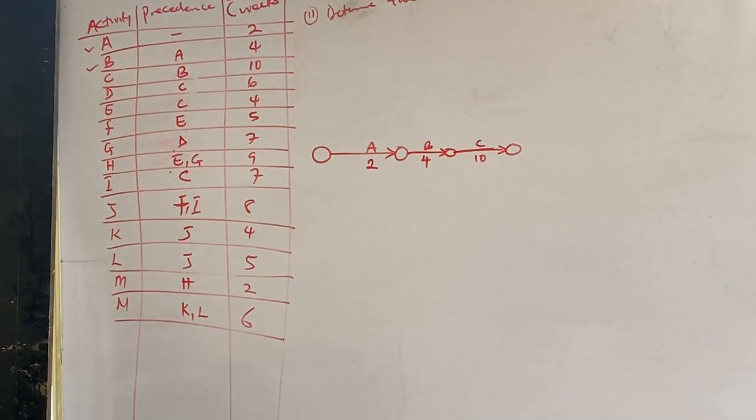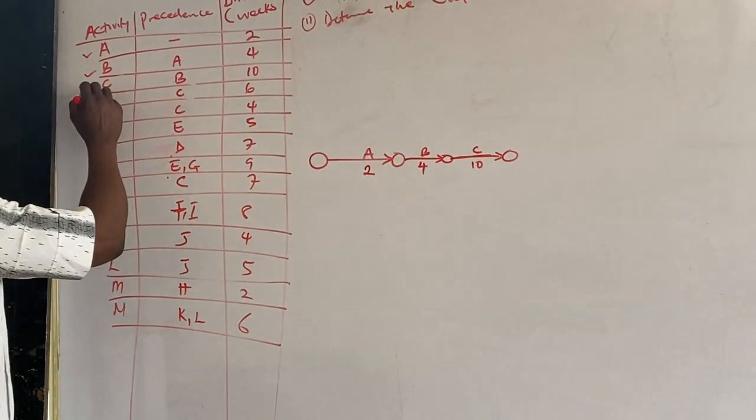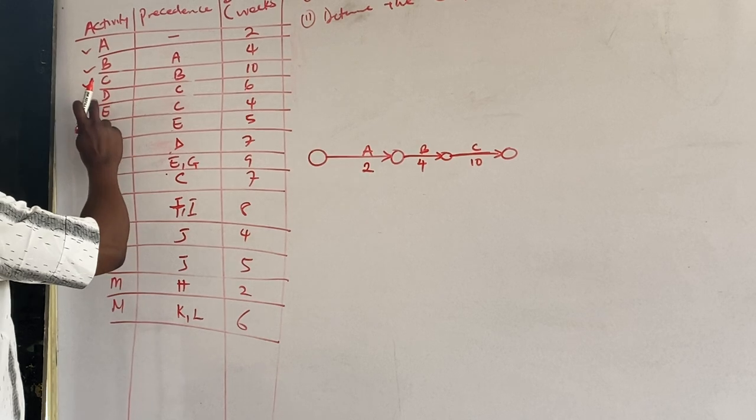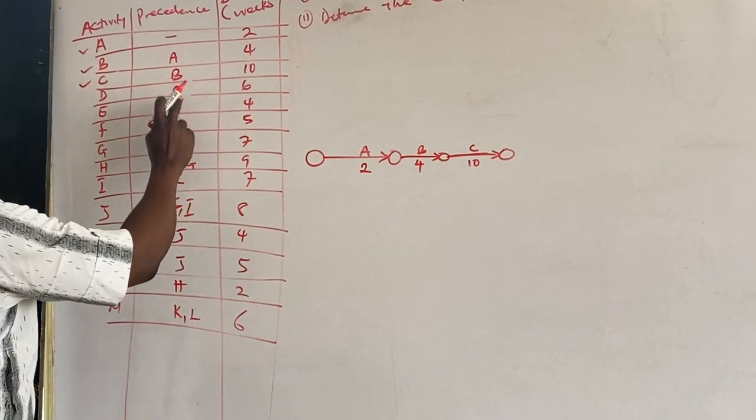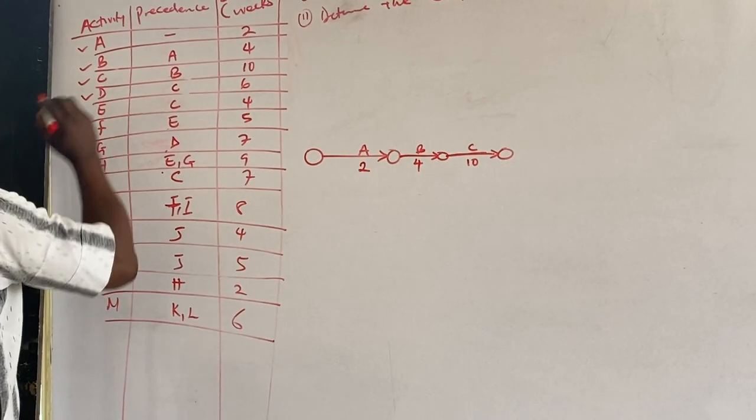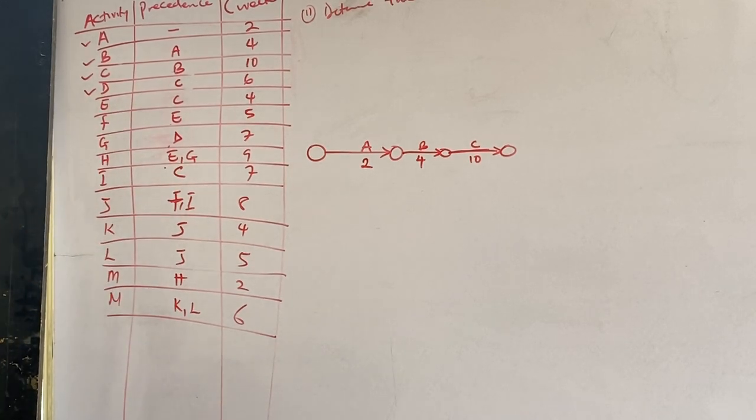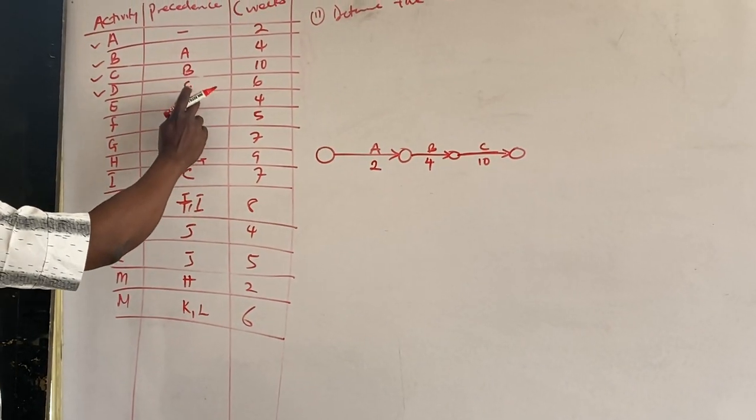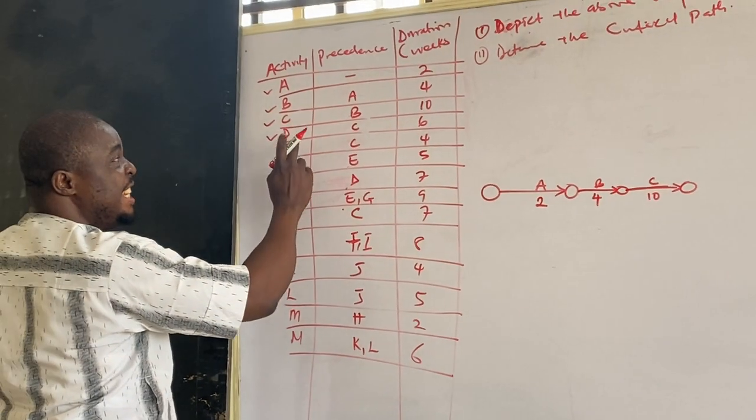The next one is D but it is preceded by what? So D is preceded by C. Now take note! C is preceding two things, D and E.